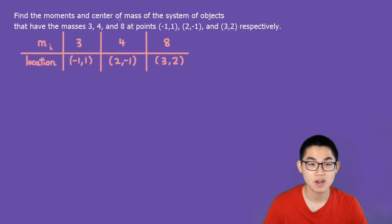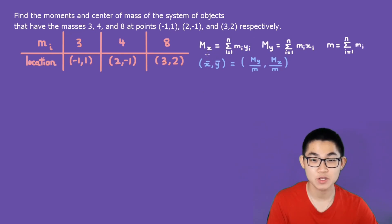Find the moments and the center of mass of the system of objects that have the masses 3, 4, and 8 at these points respectively. So the first step is to set up this table looking like this. The next step is to use the formulas. So these are the formulas to calculate the moments. And let's start with that.